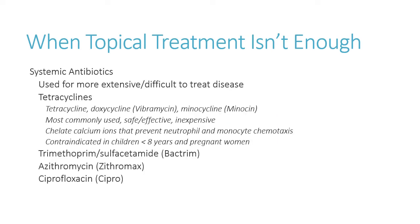Systemic antibiotics also have a role to play for extensive or difficult-to-treat disease. This is where tetracyclines come in. Remember: don't give tetracyclines to pregnant women or children less than eight years old, because of tooth staining and bone effects. Tetracyclines like doxycycline and tetracycline are very cheap and very effective. Watch out for drug-food interactions — don't take with calcium or iron because they bind up the drug and reduce absorption. Other options used less frequently include Bactrim, azithromycin, and ciprofloxacin, but by far tetracyclines — particularly doxycycline — are the most common.